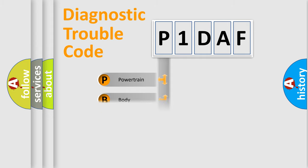Powertrain, body, chassis, and network. This distribution is defined in the first character code.